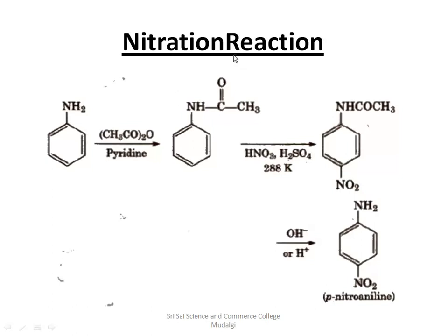Next is the nitration reaction — addition of nitric acid in the presence of concentrated H₂SO₄. When aniline is first treated with acetic anhydride and pyridine to protect the NH₂ group, then reacted with HNO₃ and H₂SO₄, it forms para-nitroaniline. The NO₂ group is introduced at the para position, making para-nitroaniline the major product.